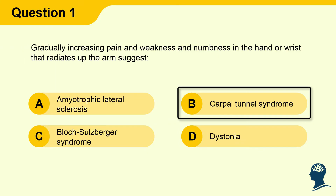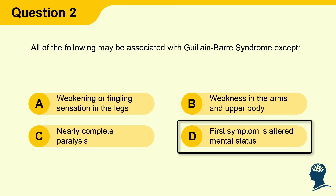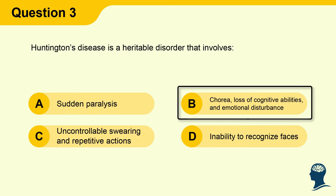Question 1 answer: B, Carpal tunnel syndrome. Question 2 answer: D, First symptom is altered mental status. Question 3 answer: B, Chorea, loss of cognitive abilities and emotional disturbance.